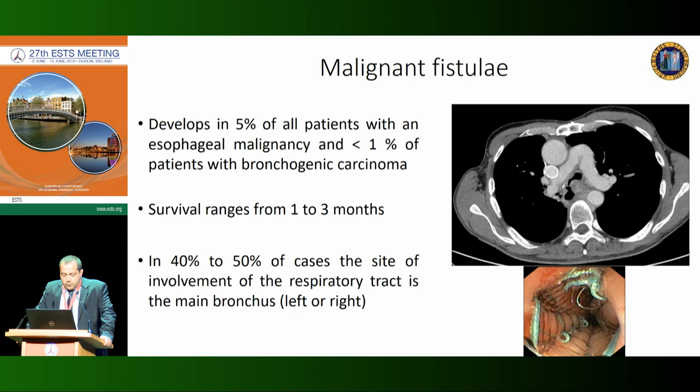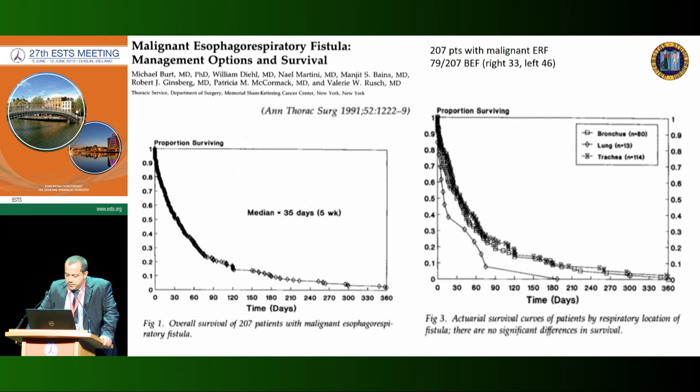Regarding malignant fistulas, about 5% of patients with esophageal malignancy and approximately 1% of patients with bronchogenic carcinoma will develop a bronchoesophageal fistula during their clinical history. When BEF becomes symptomatic, the clinical course worsens rapidly, with survival ranging about 1 to 3 months. In up to 40 to 50% of cases, the respiratory involvement is at the carina or one of the main bronchi.